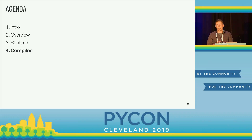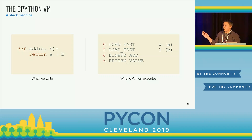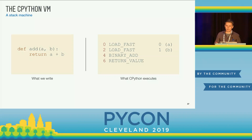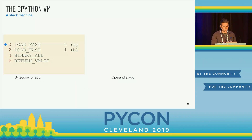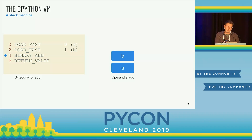Now that we've figured out the runtime bits, let's dive into the compiler. Before we get too deep, we'll go over how the CPython VM executes Python code. Here we have a simple function called 'add' that just adds its arguments — that's what we write. That actually gets compiled by CPython into bytecode, which is bytecode for a stack-based virtual machine. The blue arrow is going to represent the instruction pointer for the virtual machine, and the empty space on the right is going to house the contents of the stack, which starts out empty.